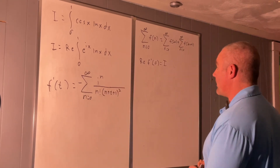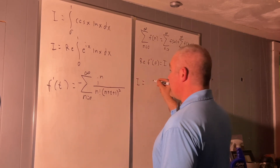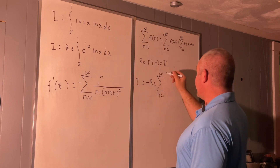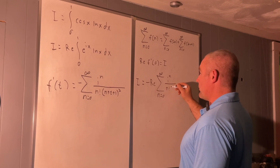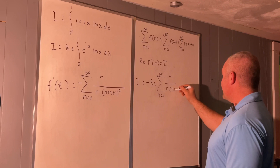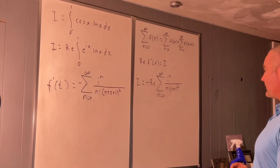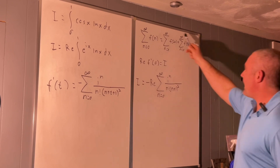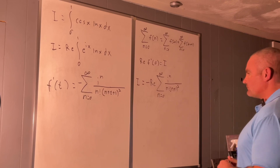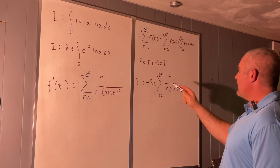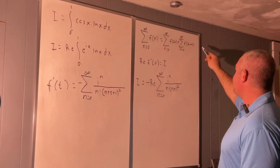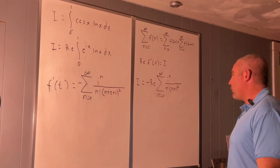Now we have f prime of t in summation form. Let's plug in 0 and take the real part. I is equal to negative real part of the sum from n equals 0 to infinity of i to the n over n factorial times n plus 1 all squared. That's why we're going to use the splitting identity. So I equals the negative real part of what we get by plugging in 2n and 2n plus 1 respectively for n.